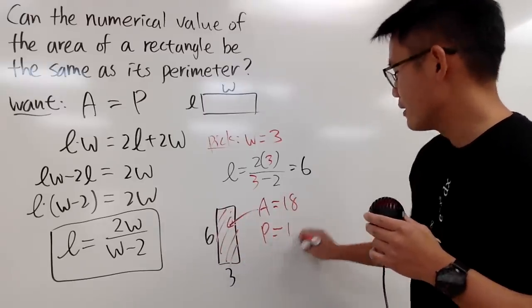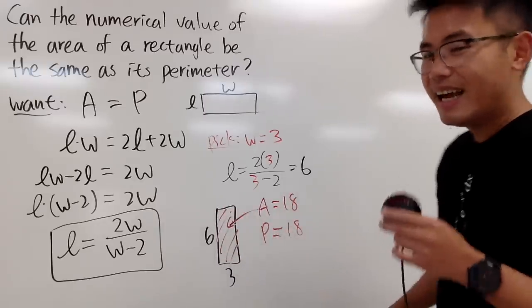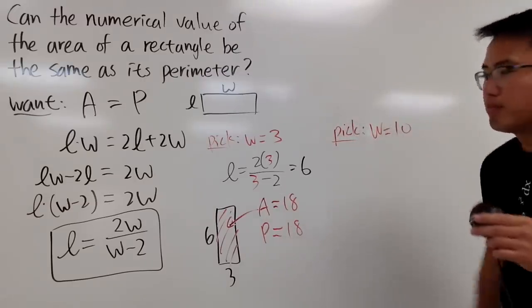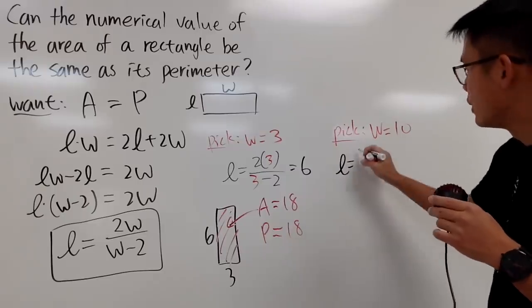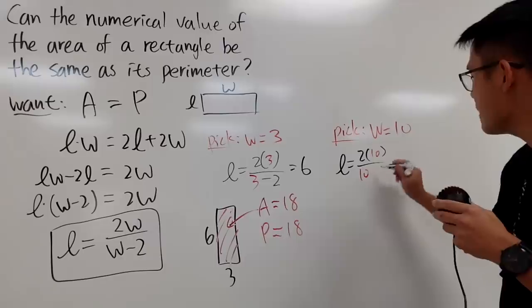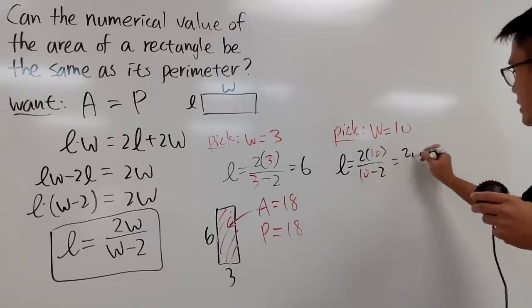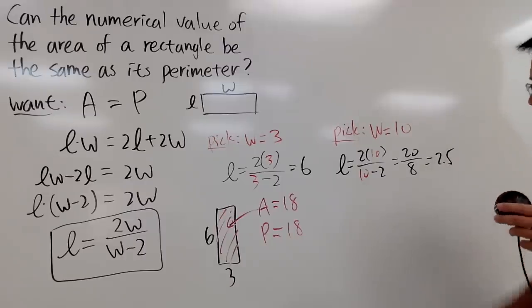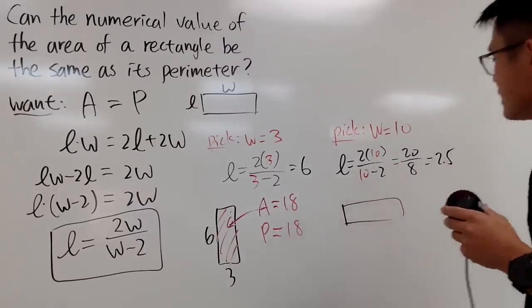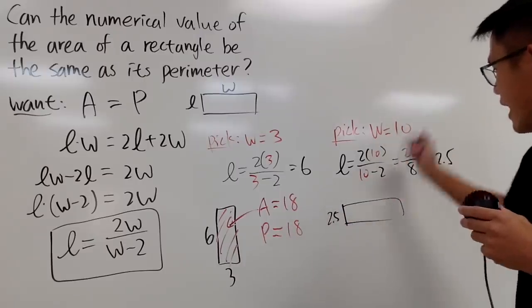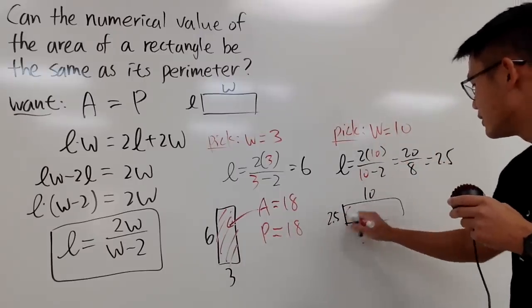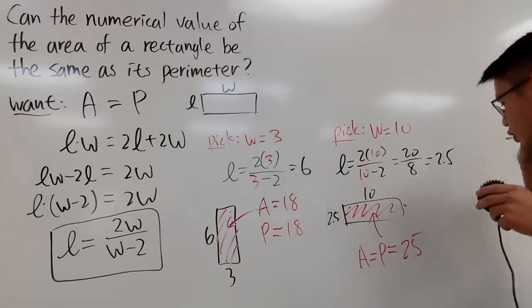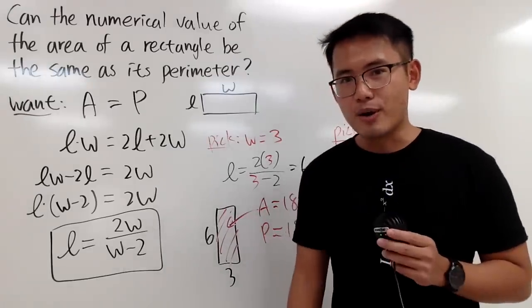You can do another example. Pick w to be 10. Plug in 10, you get l equals 2 times 10 over 10 minus 2. This is 20 over 8, and you can reduce that. Use fraction or decimal, up to you: 2.5. You can draw a picture real quick. This time I will label 2.5 here and 10 right here. Do it on your own, you will see that the area will be the same as the perimeter and it will be 25.